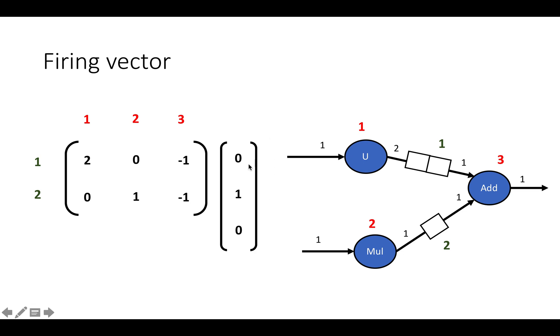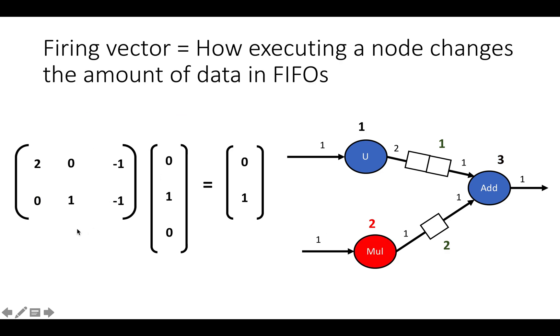For example, in this case, the firing vector 0, 1, 0 denotes node number two, which is our multiplier, firing. When we do this matrix multiplication problem, when the multiplier fires: 2 times 0 is 0, plus 1 times 0 is 0, plus minus 1 times 0, which adds up to 0. And then we also get 0 times 0, plus 1 times 1, plus minus 1 times 0, which is just 1. So we get the output vector 0, 1, which denotes that the multiplier—rows here denote edges—when the multiplier fires, it adds one piece of data to arc 2, and none to arc 0.